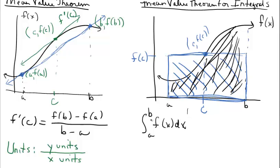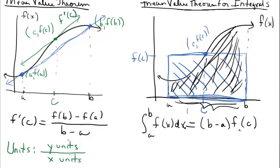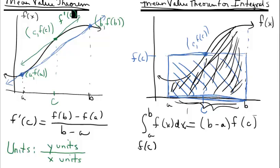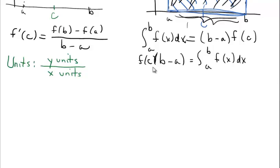Let's put this all together: the mean value theorem for integrals. We know the area can be found through the integral. The area in the rectangle is base times height: the base is b minus a, and the height is represented by the notation F of C. So this is the mean value theorem for integrals. Typically, we have this rearranged with F of C on one side — either arrangement is considered the mean value theorem for integrals.